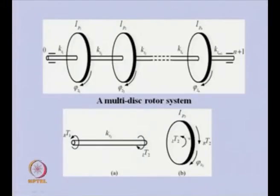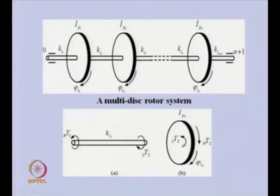We will try to relate these two field variables from one end of the shaft to the other end using the free body diagram. Similarly, for the disc, we will try to derive the field variable relations between the left side and right side of the disc. Because of inertia, we expect that the torque at the two ends of the disc from the shaft reactions will be different.